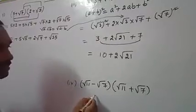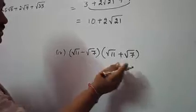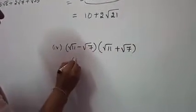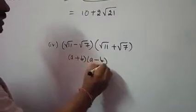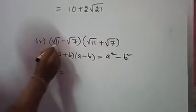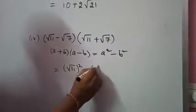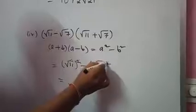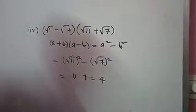Now see root 11 minus root 7 into root 11 plus root 7. This is like A minus B into A plus B. The identity A plus B into A minus B equals A square minus B square. So here, A is root 11: root 11 whole square minus root 7 whole square. Square and root get cancelled: 11 minus 7, which is 4.